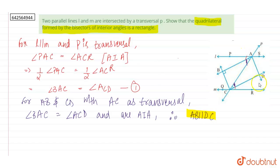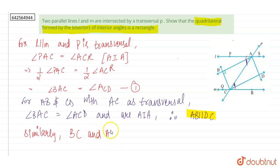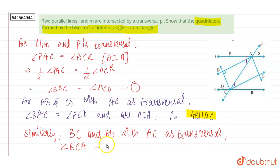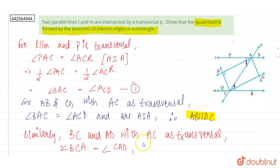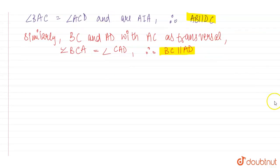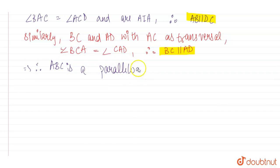Similarly, for lines BC and AD, angle BCA will be equal to angle DAC. So BC will be parallel to AD. Similarly, for BC and AD with AC as transversal, angle BCA will be equal to angle CAD. Therefore BC will be parallel to AD. So we have proved that BC is parallel to AD, and the opposite sides of the quadrilateral are parallel.